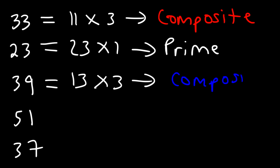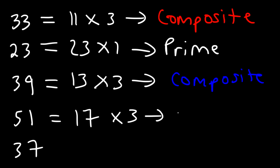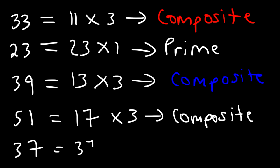Now what about 51? Is it prime or composite? 51 is divisible by 3 — 51 is 17 times 3 — so that makes it a composite number. And finally, 37: 2 doesn't go into it, it's not even. 3 doesn't go into it. Nor does 5 or 7. 37 can only be expressed as 37 times 1, so this is a prime number.